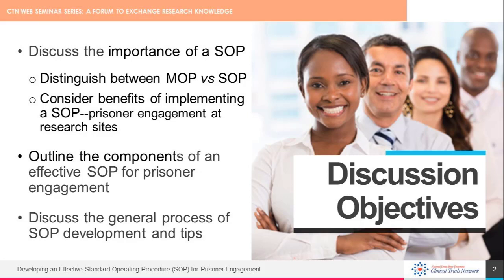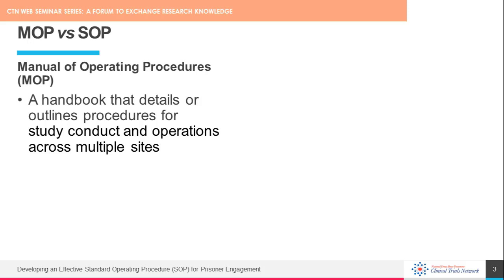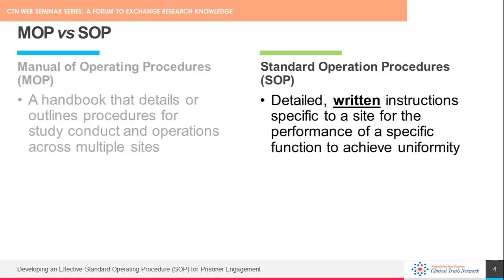Some of you may already be comparing notes with colleagues about what is the difference between a manual of operations, often referred to as the study MOP, and a standard operating procedure, often referred to as an SOP. A MOP is a handbook that details procedures for study conduct and operations written to be applied across multiple sites, such as for multi-site trials. An SOP is detailed written instructions specific to a site for the performance of a specific function or procedure to achieve uniformity.